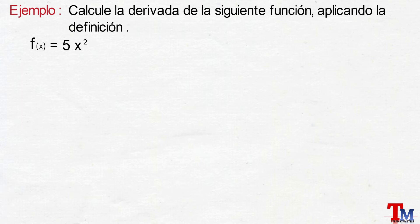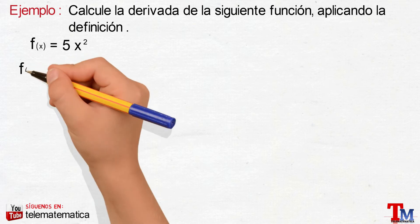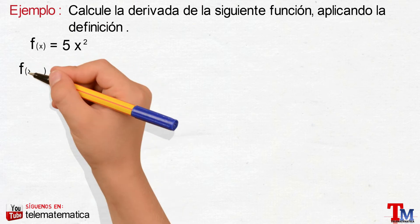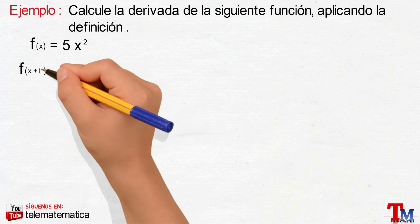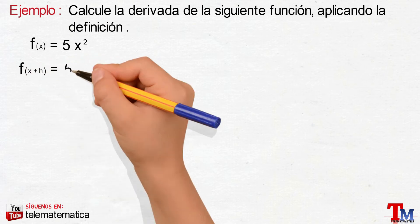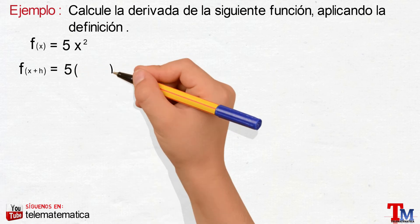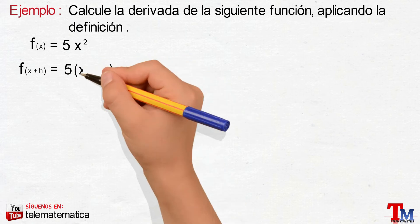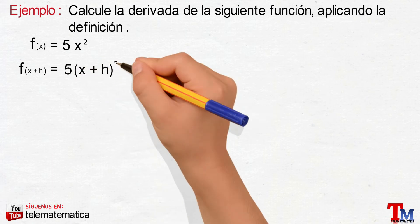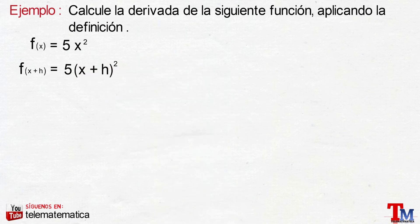Para calcular la derivada de una función cuadrática aplicando la definición, al igual que para las funciones lineales, comenzaremos por determinar f evaluada en x más h, que nos quedaría 5 que multiplica a x más h, elevado al cuadrado.